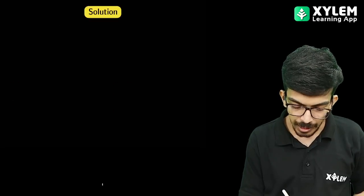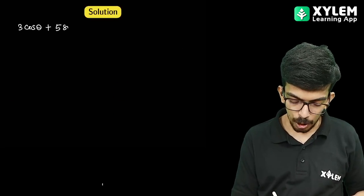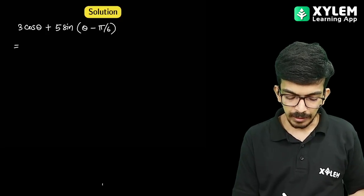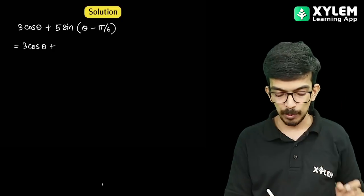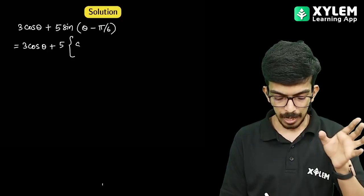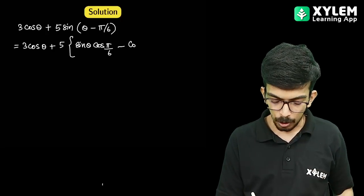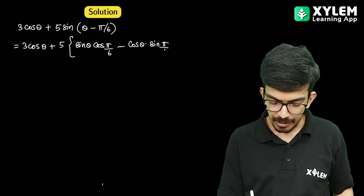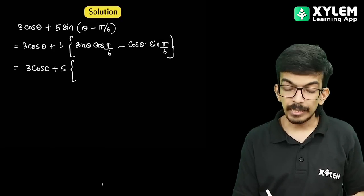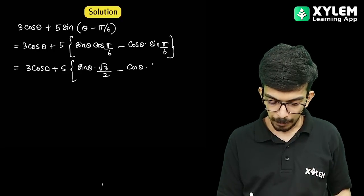3 cos theta plus 5 sin(theta minus 5π/6). We expand using sin(a minus b) equals sin a cos b minus cos a sin b. This becomes 3 cos theta plus 5 times sin theta into root 3 by 2 minus cos theta into 1 by 2.